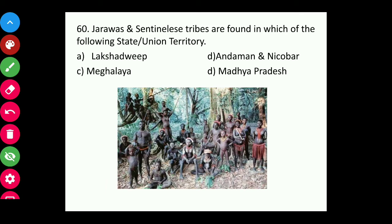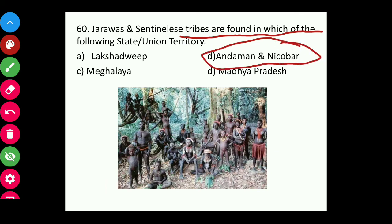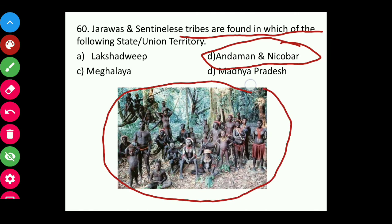Question sixty: The Jarawas and Sentinelese tribes are found in which state or union territory? The answer is Andaman and Nicobar Island. You can see from the picture these tribes living in Andaman and Nicobar Island.